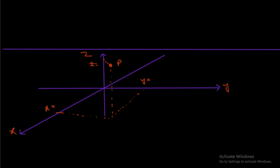Let us assume some values. For example, I move in the x-direction 2 units, in the y-direction 4 units, and the height I want to move is 7 units. We can move to any point in this space just by these three parameters: the x-value, the y-value, and the z-value. The Cartesian coordinate system is the simplest of all the three systems.